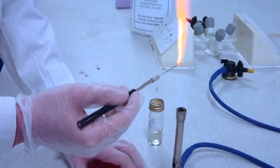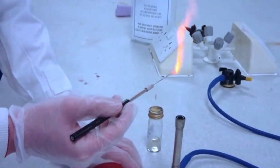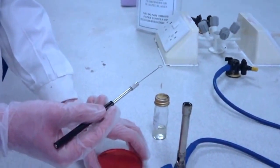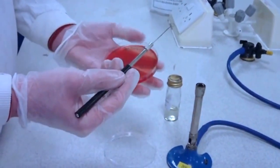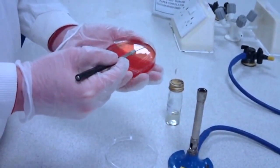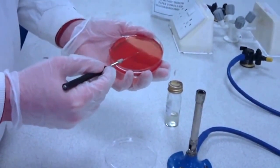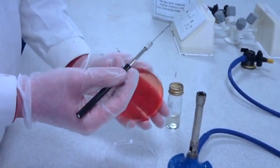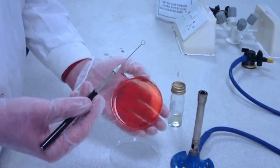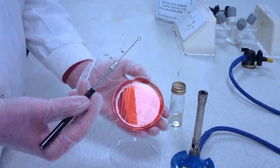Reflame the loop and allow to cool. And then in the final quarter of the agar, you need to streak the bacterium in a zig-zag formation from the outside of the agar towards the centre, making sure to not touch where you have previously streaked as this will not give the desired separation.